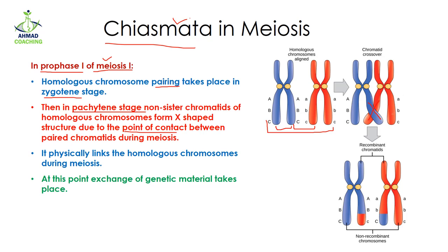Chiasmata occurs because of the point of contact between the non-sister chromatids during the process of meiosis. Chiasmata is very important because it leads to crossing over — it physically links the homologous chromosomes during meiosis. If there is no chiasmata formation, it means there will be no crossing over.